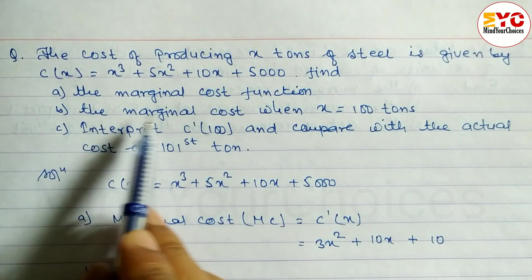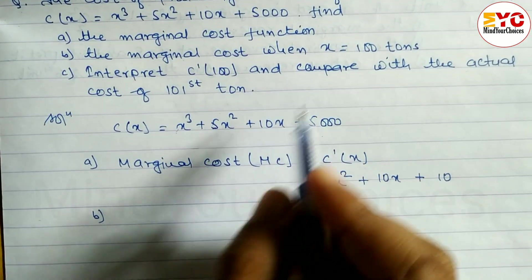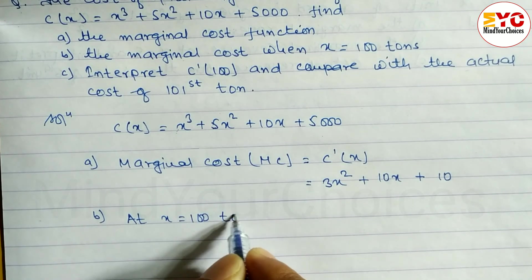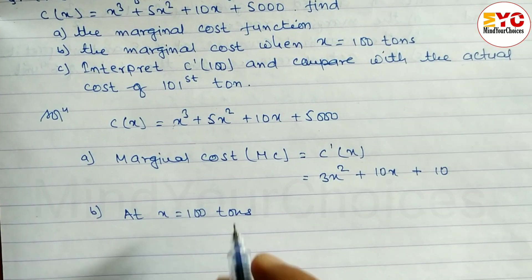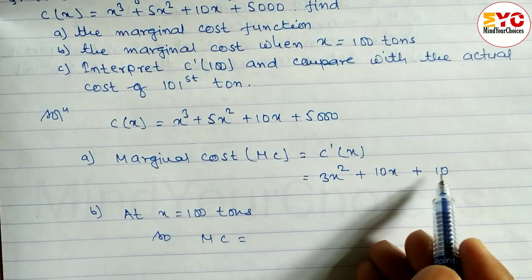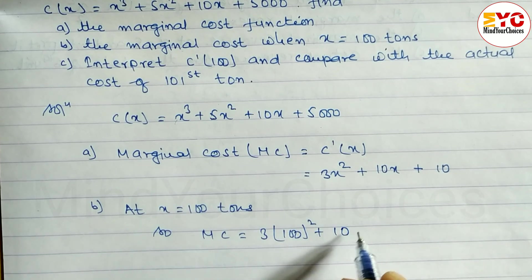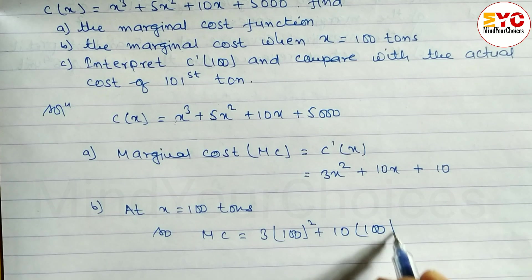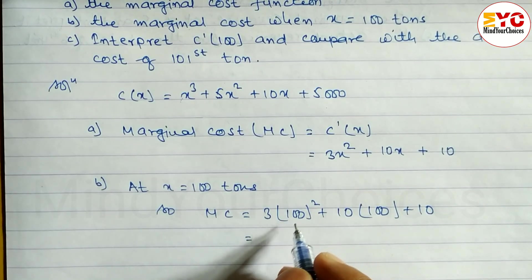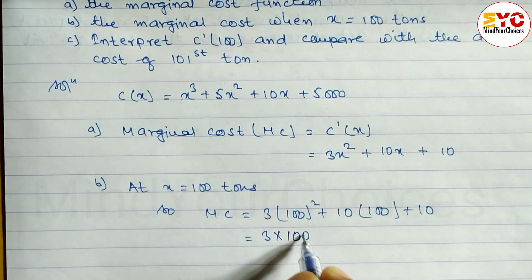Part b: find the marginal cost when x is equal to 100 tons. At x equal to 100, MC equals 3 times 100 squared plus 10 times 100 plus 10. Now, 100 squared equals 10,000 into 3, giving 30,000.